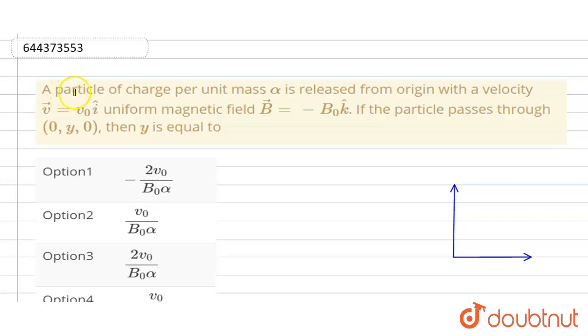Hello everyone. A particle of charge per unit mass alpha is released from origin with a velocity v vector equals v0 i cap in a uniform magnetic field B vector equals minus B0 k cap. If the particle passes through (0, y, 0), then y is equal to...